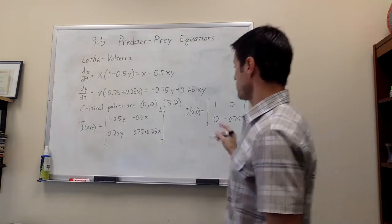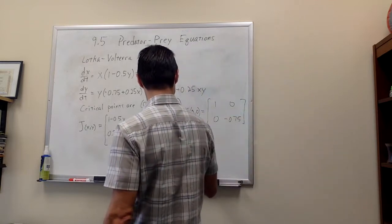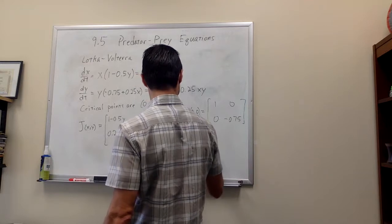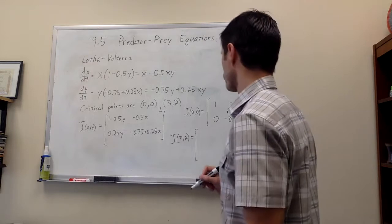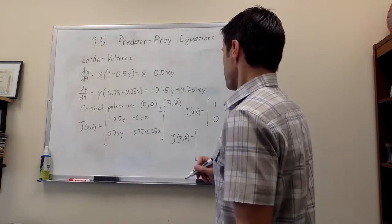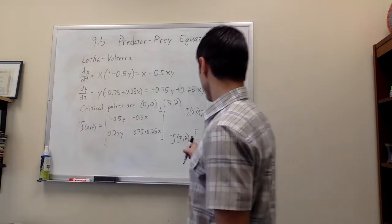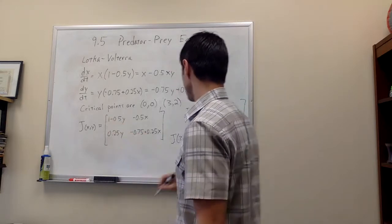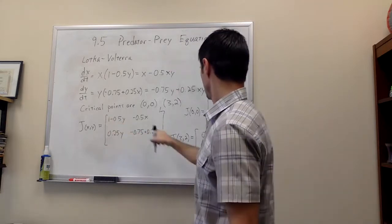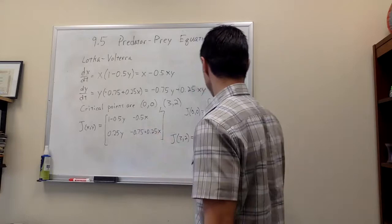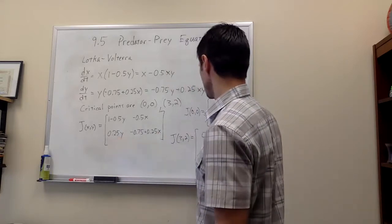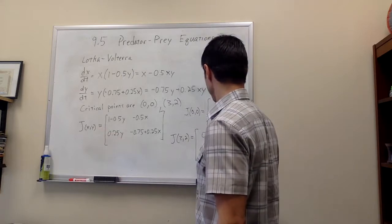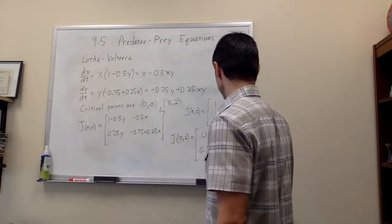And if we evaluate the Jacobian at 3, 2, that entry is 0. This entry is minus 1.5. This entry, 0.25 times 2 is 0.5. And that entry there is 0.